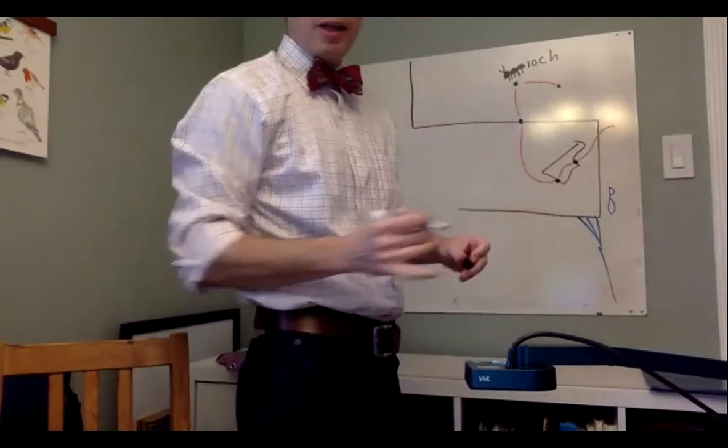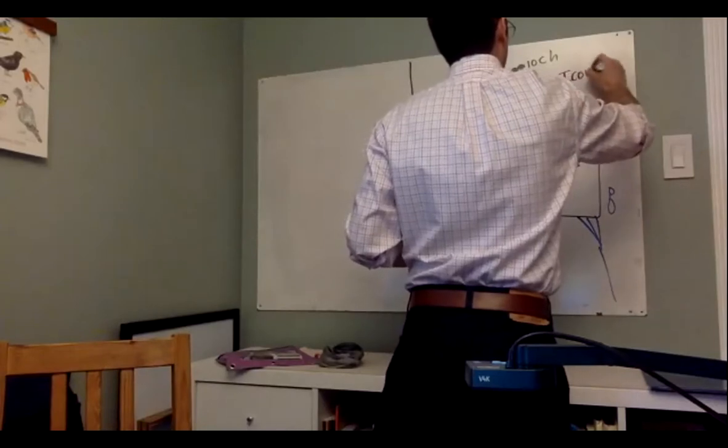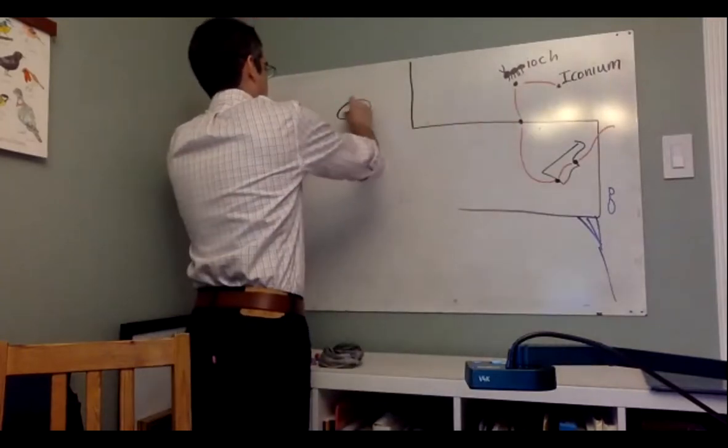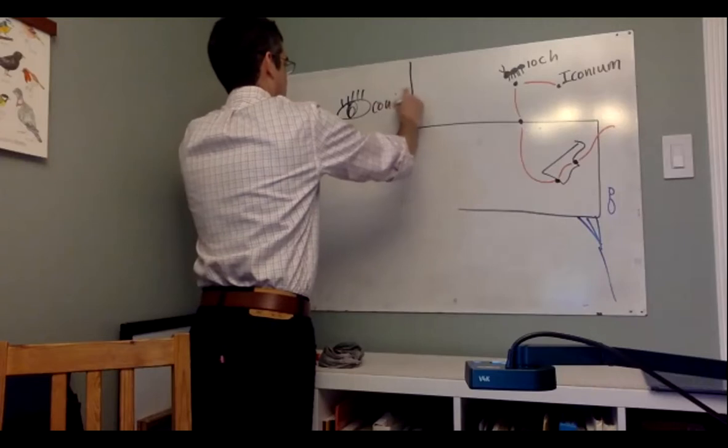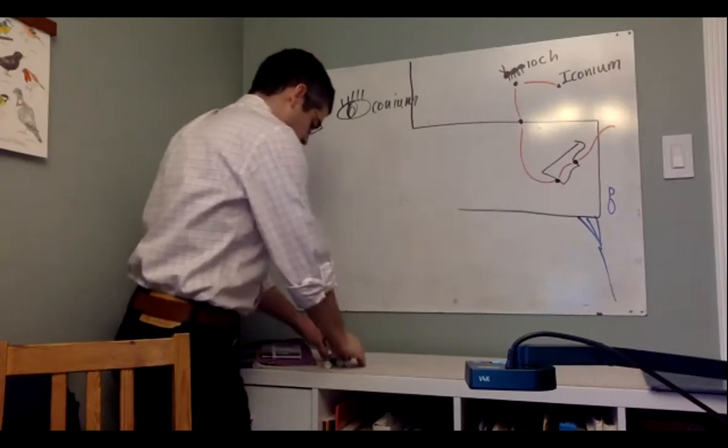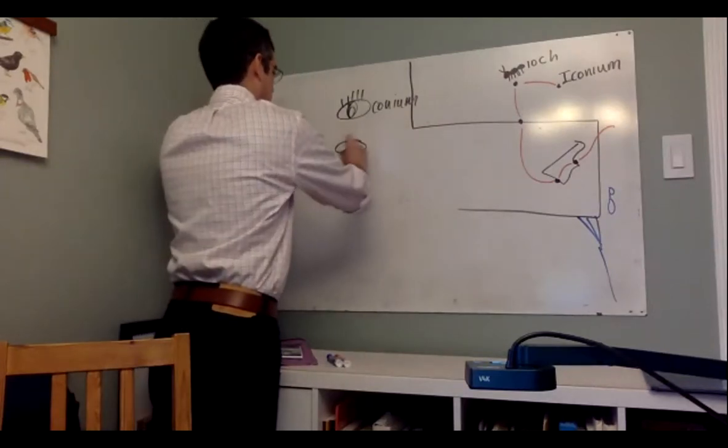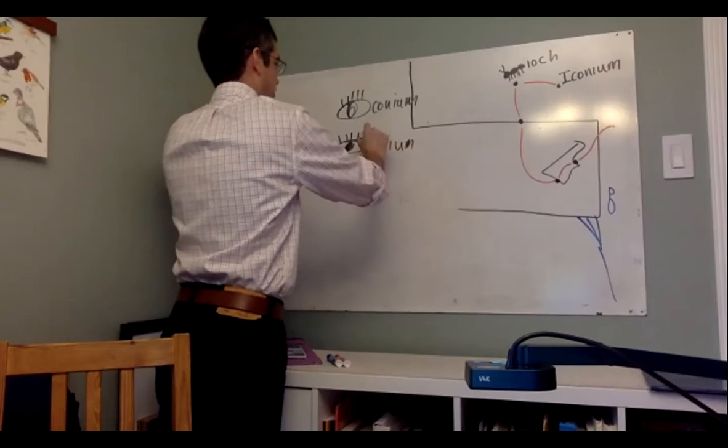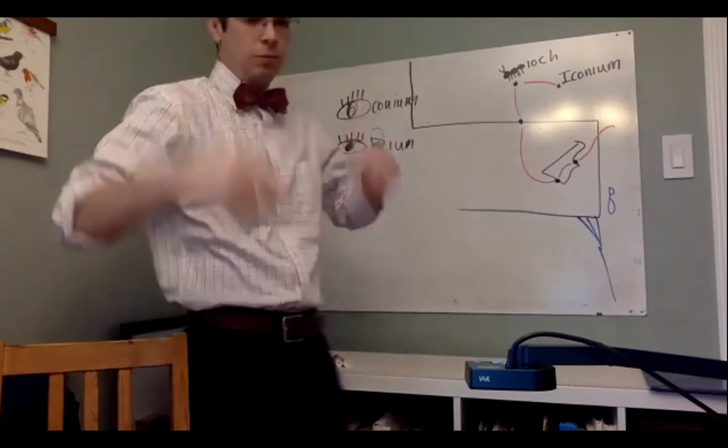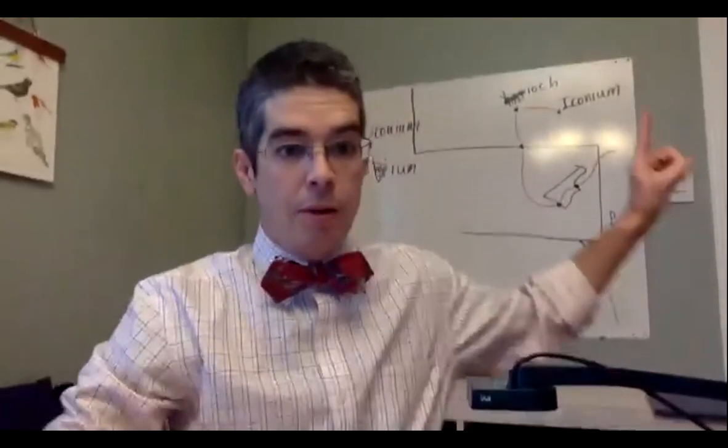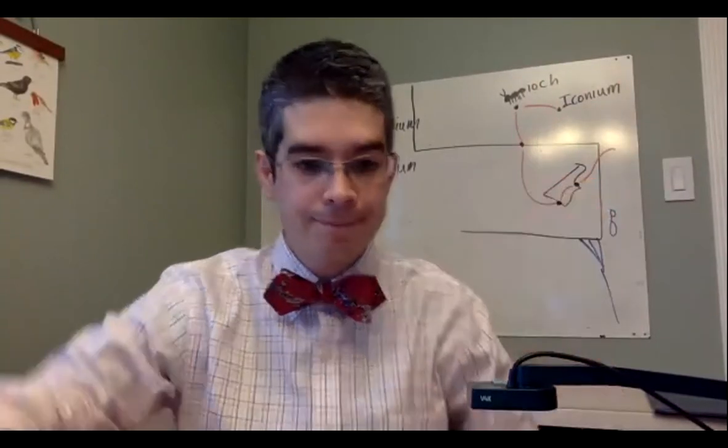Now I'm going to put in the names. We're not going to do all the names because we don't need them all, but this is the Antioch that he just left. And they're in Iconium. That's how you spell Iconium, and if you want, you can draw an eyeball, cone, e-um. I-cone-ium.